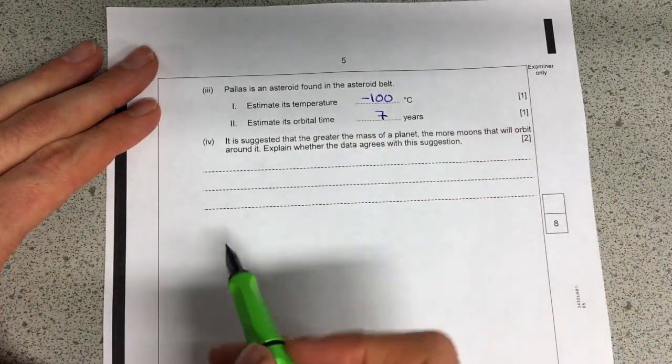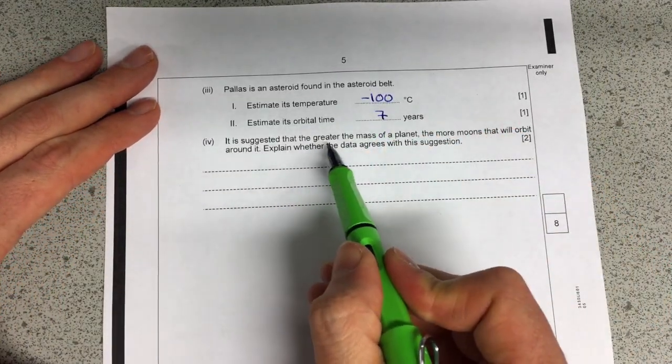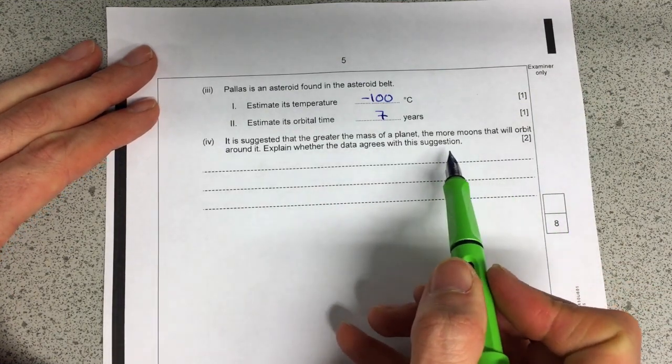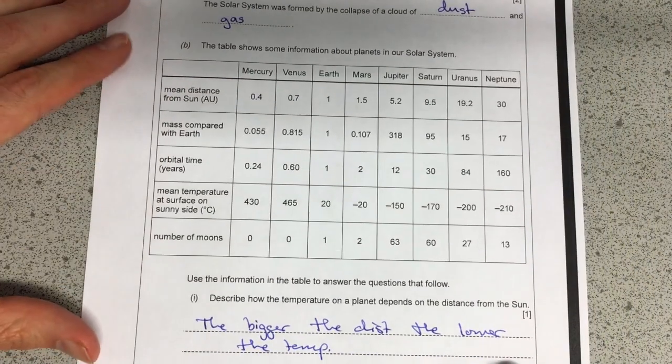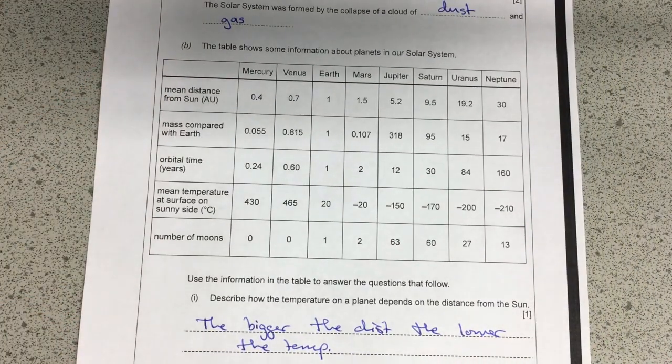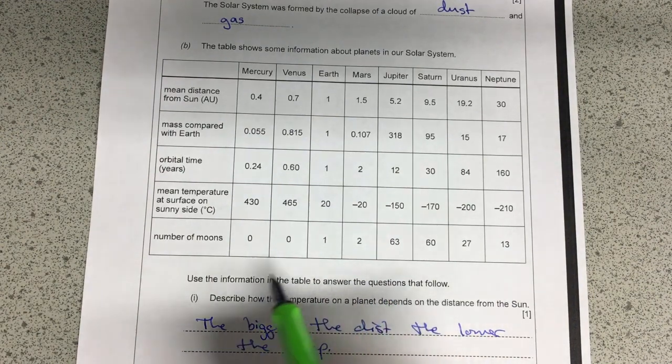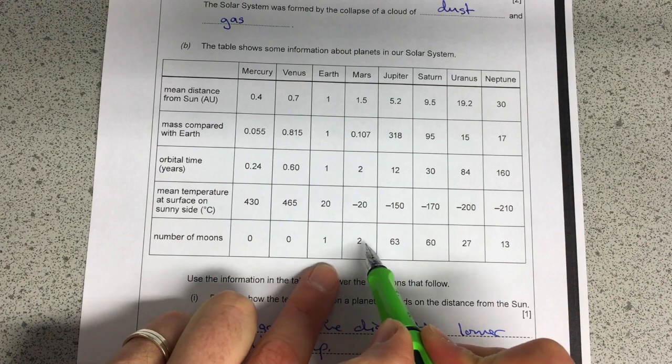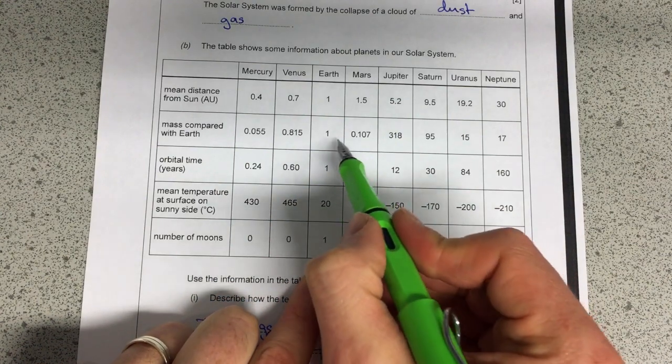And then lastly it says it is suggested that the greater the mass of the planet, the more moons that will orbit around it. Explain whether the data agrees with this suggestion. Now it's set up a little bit funny. You could just say I agree and be lazy or you can have a little bit of a look and see what you can find out.